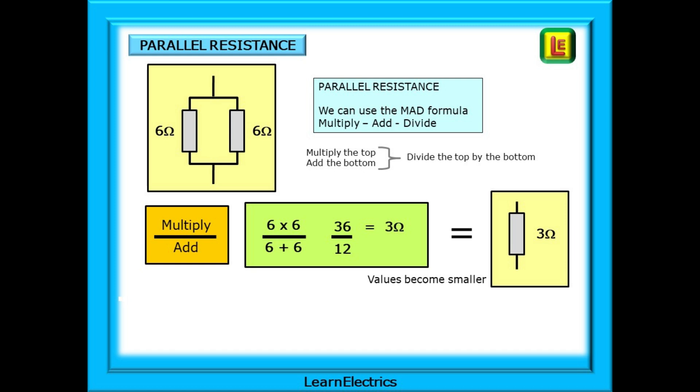Multiply, add, divide. In our case we have 36 on the top divided by 12 on the bottom. Our new resistance value is 3 ohms. 3 ohms is less than 6 and we will find that the effective resistance is always smaller than the smallest resistor.